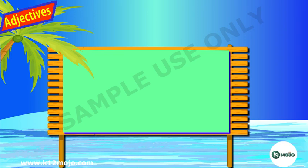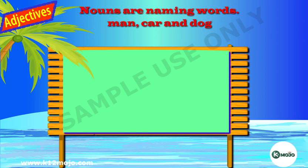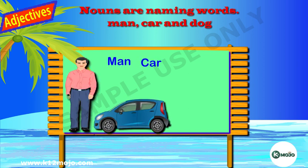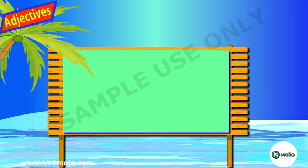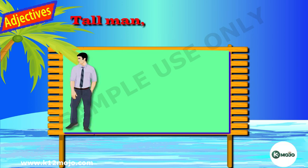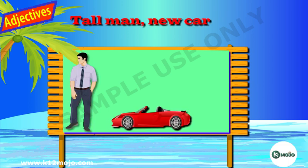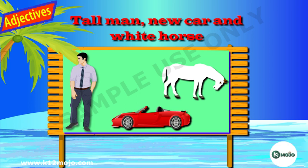Now, we will learn more about adjectives. Nouns are naming words, for example, man, car, and dog. If you want to tell more about a noun, we add some words to describe it, for example, tall man, new car, and white horse.